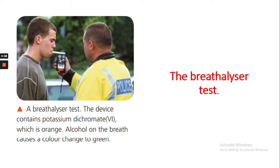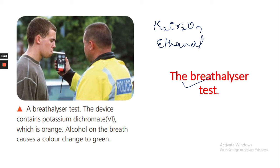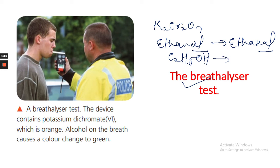There is a test to detect alcohol in a person's system, known as the Vridelser test. In this test, potassium dichromate (K2Cr2O7) oxidizes ethanol. The reaction converts ethanol (CH3CH2OH) into ethanal (CH3CHO).